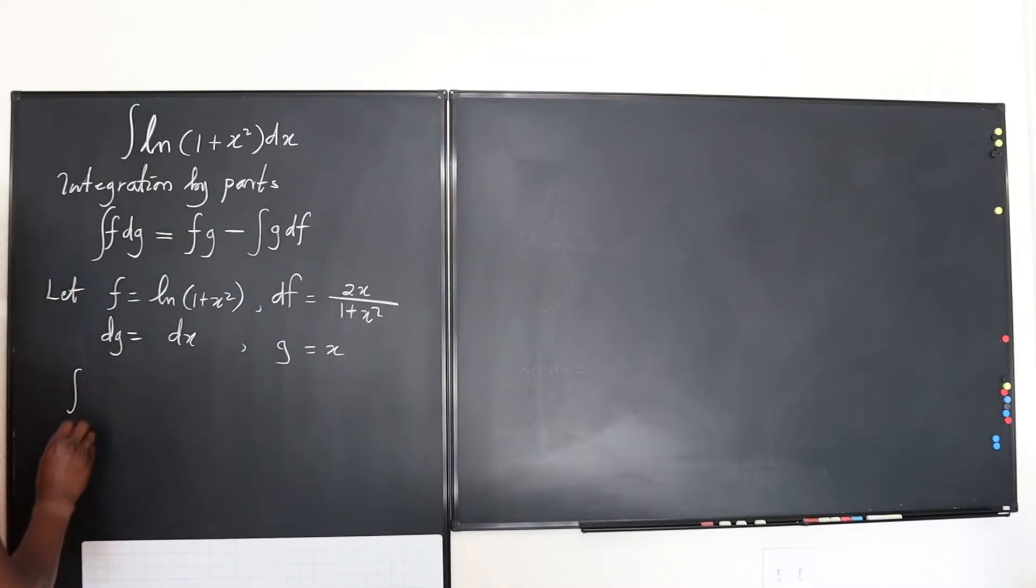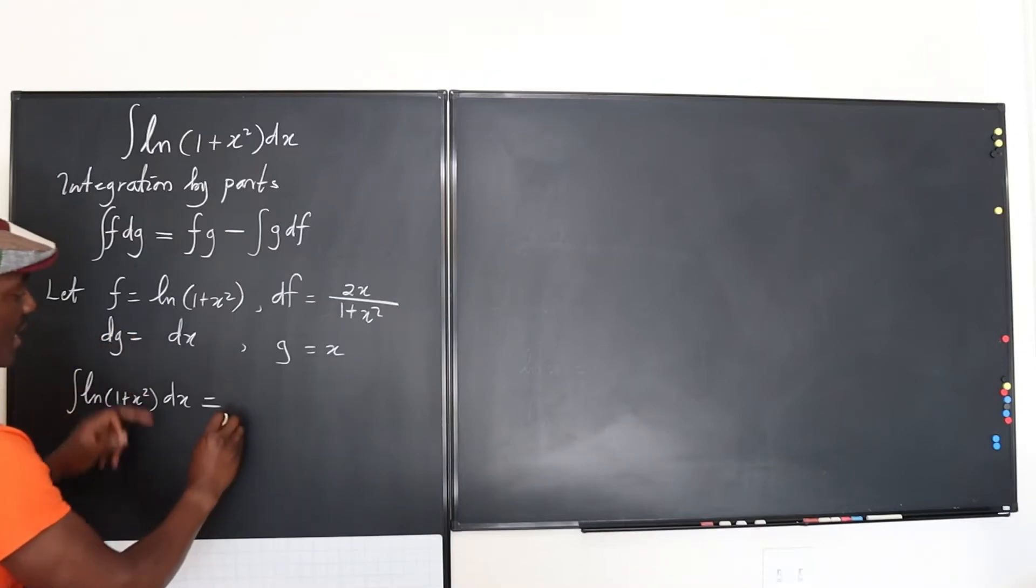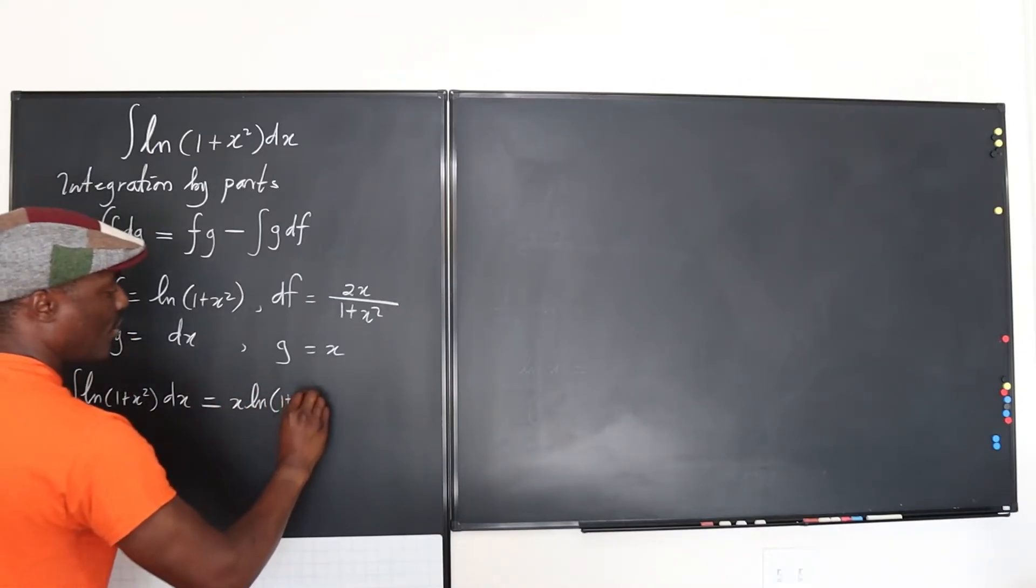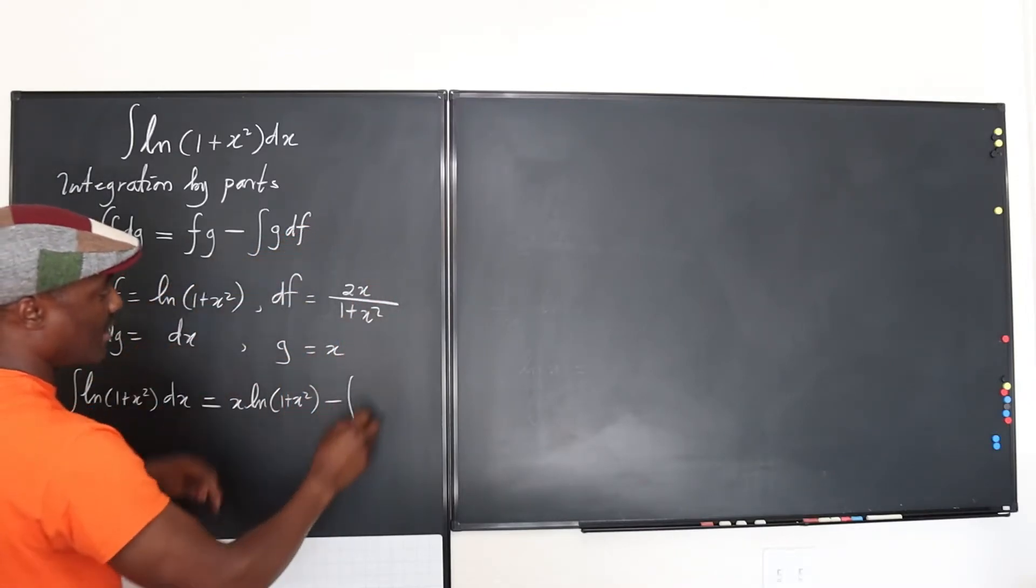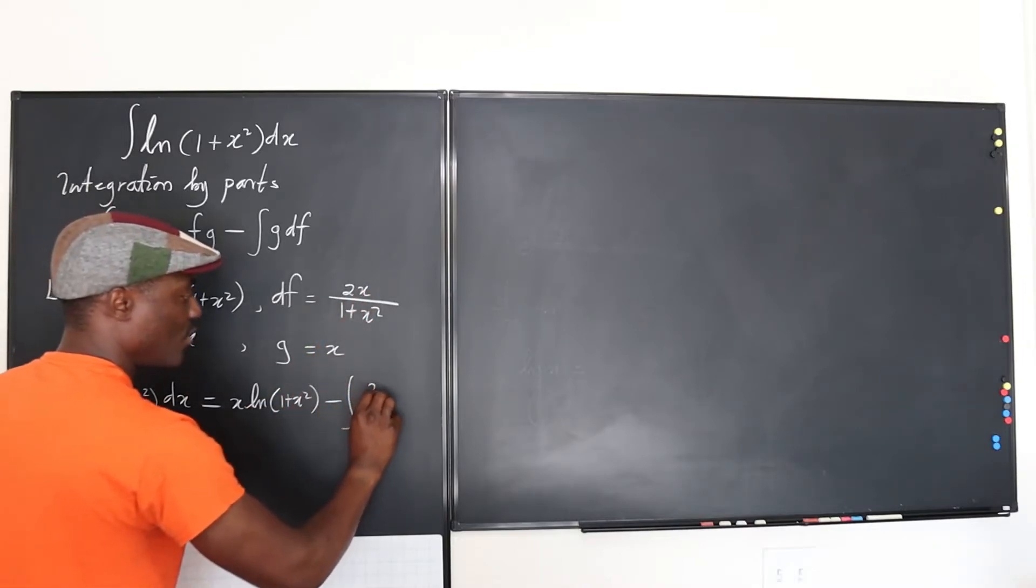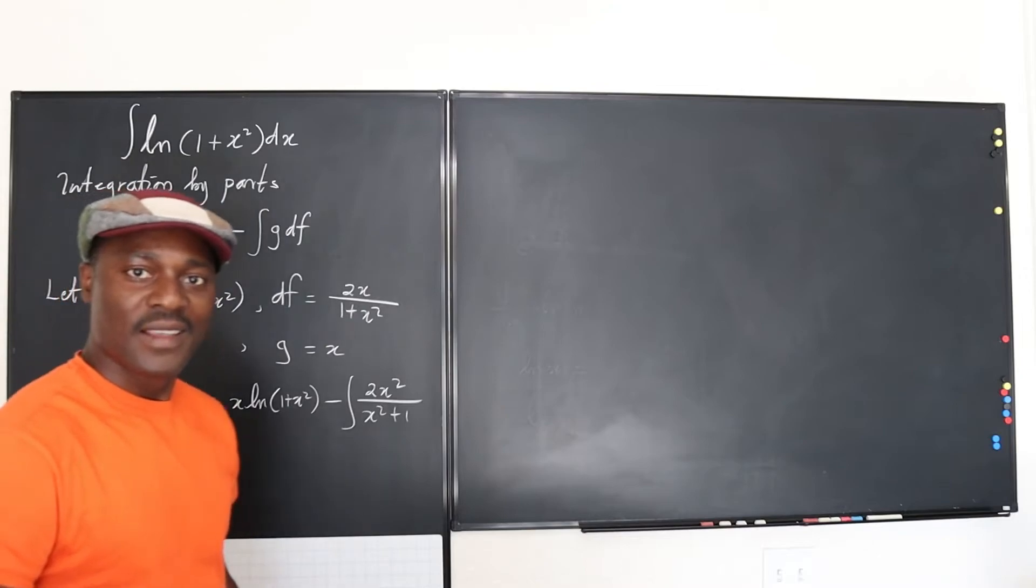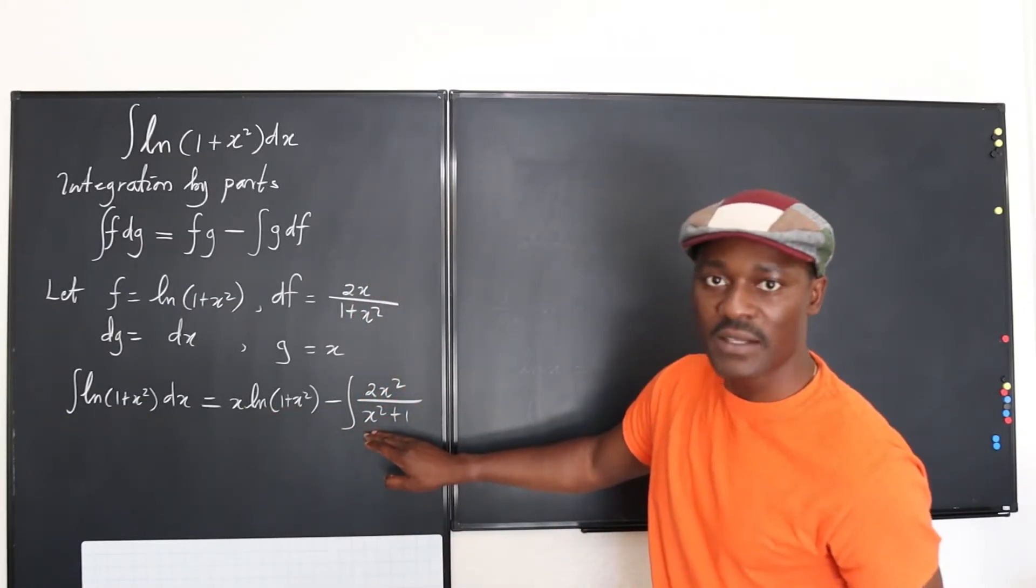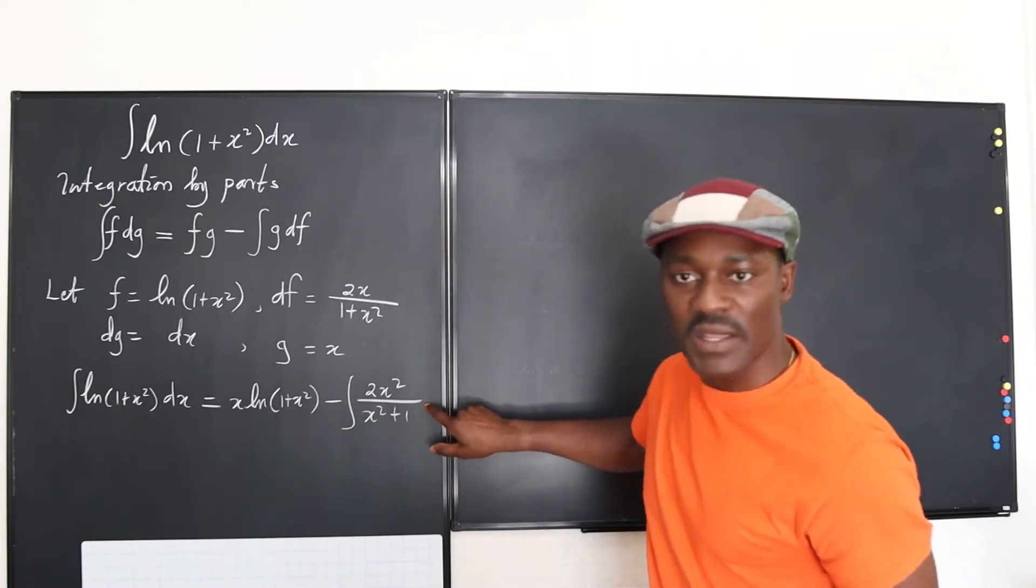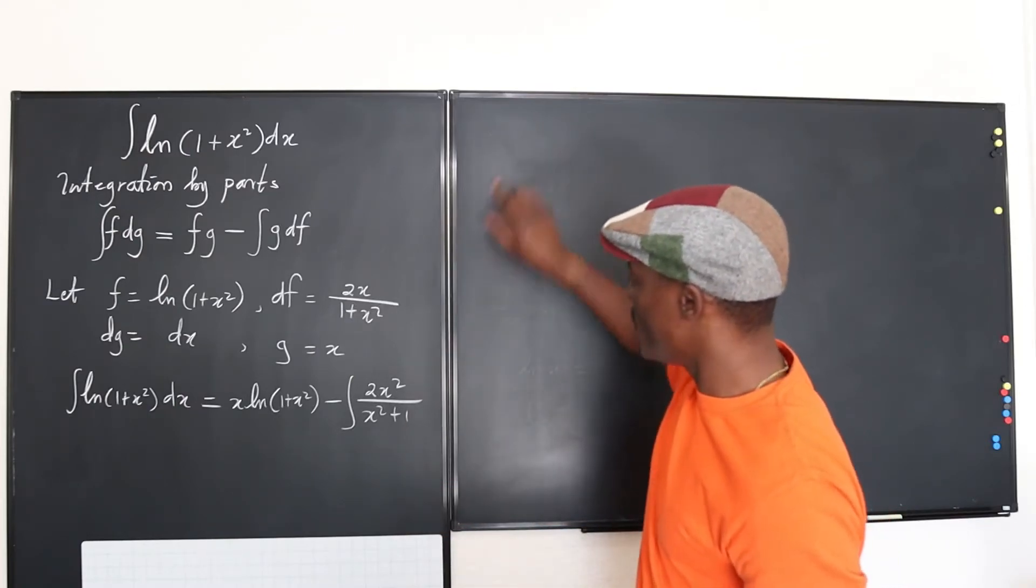So we can say the integral of natural log of one plus x squared dx, which is what we have here will be equal to f times g. f times g will be x ln of one plus x squared minus the integral of g times df. We're going to multiply this by this. Well, if we do this multiplication, g times this is going to be two x squared over, I'm going to switch this to x squared plus one. That's interesting. So the way we see this, it looks like this is our question. This is part of the answer. And this is the second part of the answer.